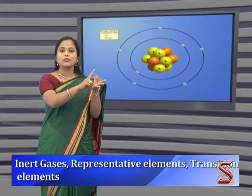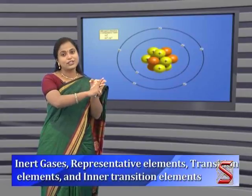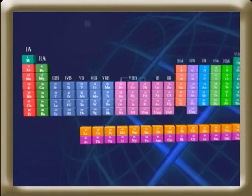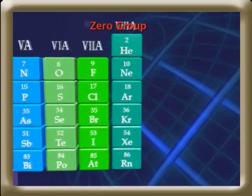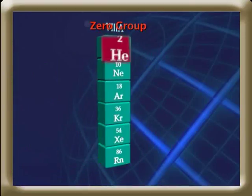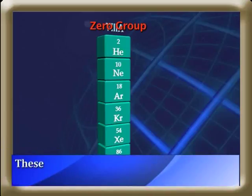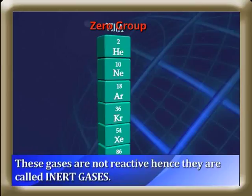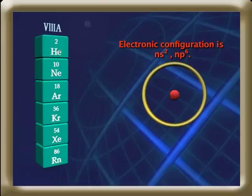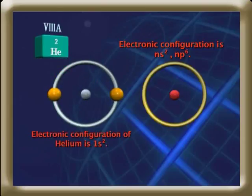On the basis of electronic configuration, elements are classified as inert gases, representative elements, transition elements, and inner transition elements. In the extreme right of the periodic table — the zero group — gases like helium, neon, argon, krypton, xenon, and radon are present. These gases are not reactive, hence they are called inert gases. The outermost electronic configuration of inert gases is ns² or np⁶, and the electronic configuration of helium is 1s².